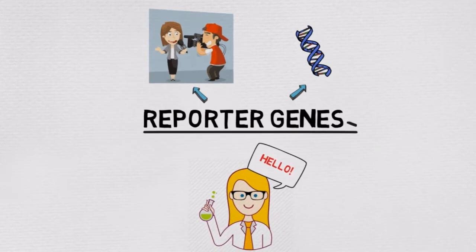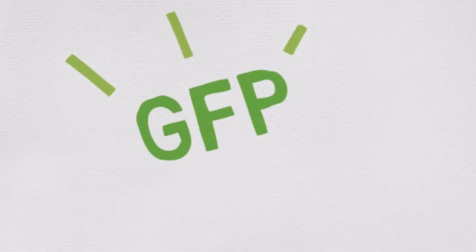So basically, this is a method that can be used to tell a scientist where a gene is being used in an organism, especially if the reporter used is green fluorescent protein, or GFP, which fluoresces as a bright green color and was isolated from a species of jellyfish.